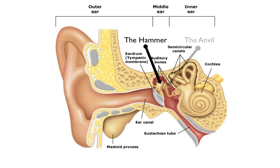The hammer, the anvil, and the stirrup. Right here, sounds are amplified before reaching the inner ear and the cochlea.